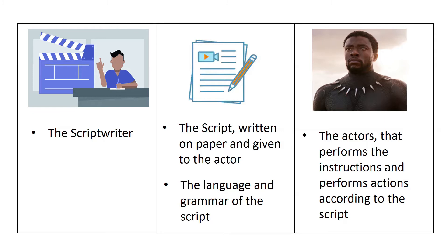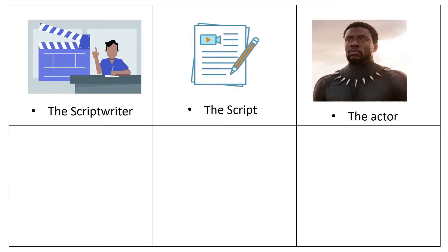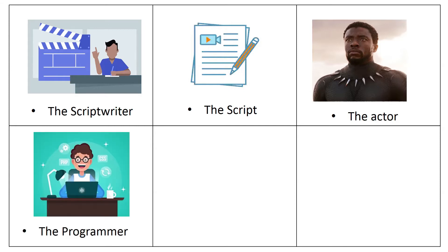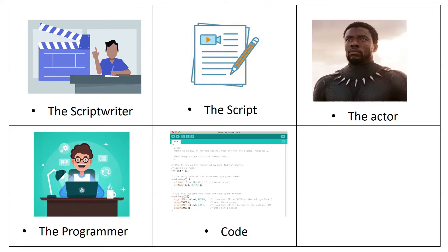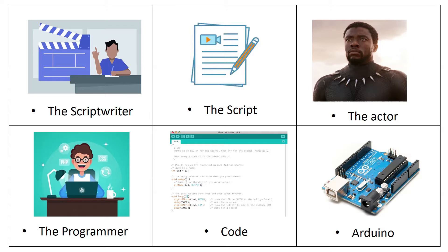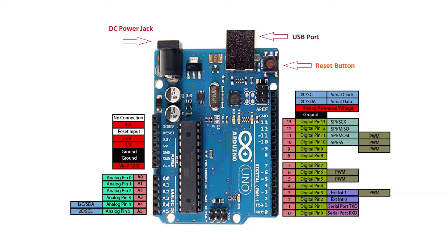In the same way that we have a script writer in acting, in programming you have a programmer — which is you. The script is the code that you write, and you write it in the Arduino software that we downloaded in one of our lessons. The actor in this case is the Arduino. The Arduino is a device that reads your script and performs your desired actions. Just as the script writer needs to be aware of the actor's features, you also need to be aware of the Arduino's features as the programmer.